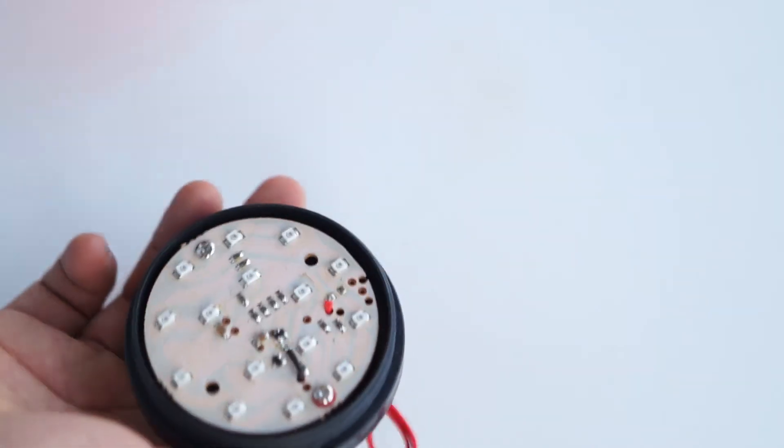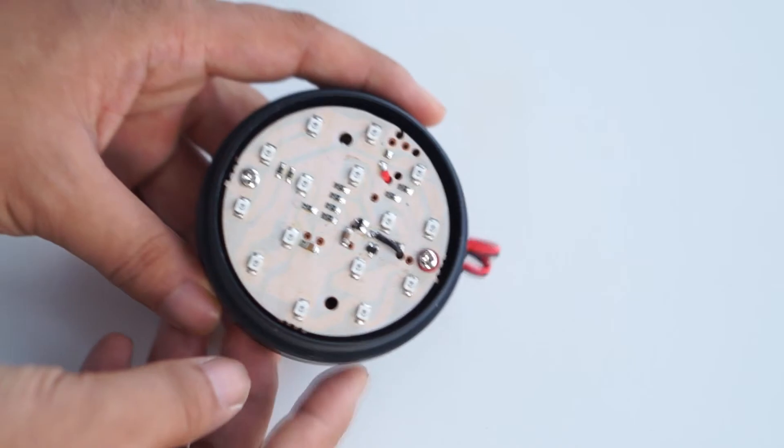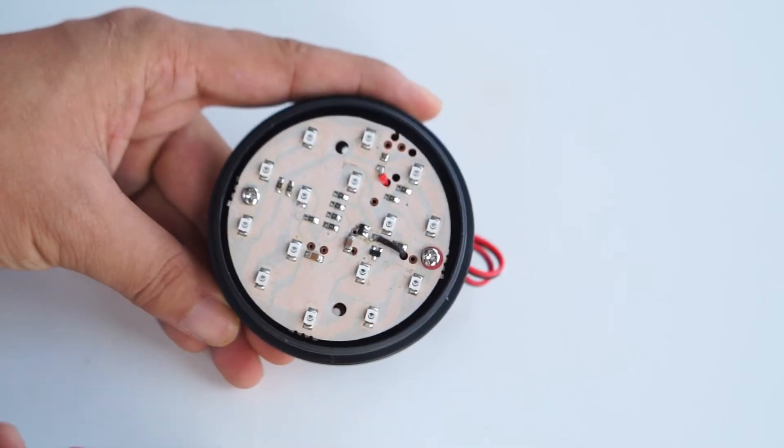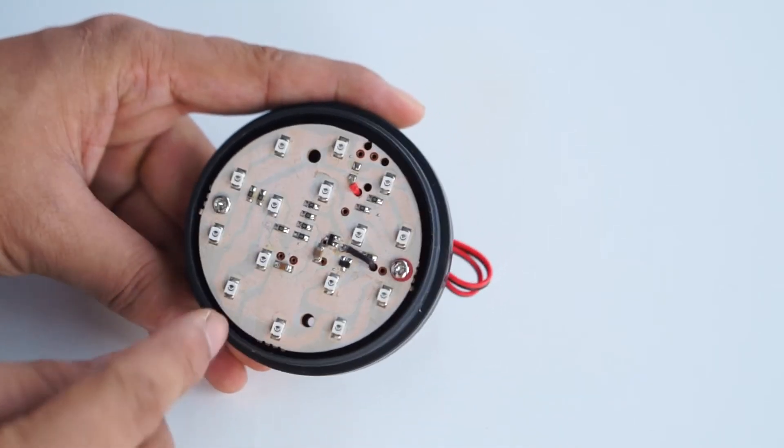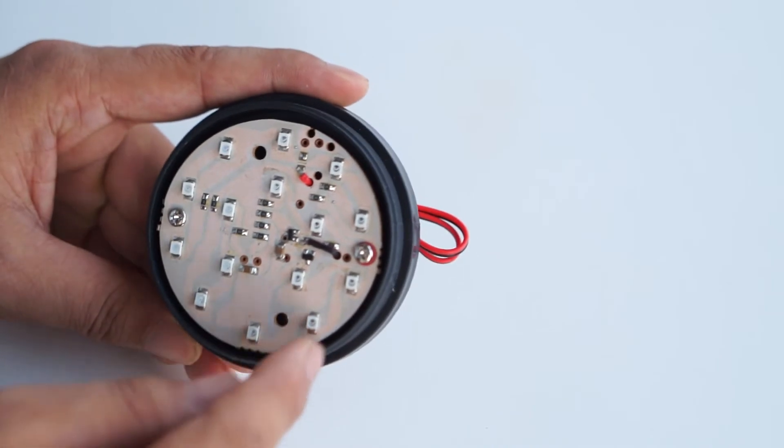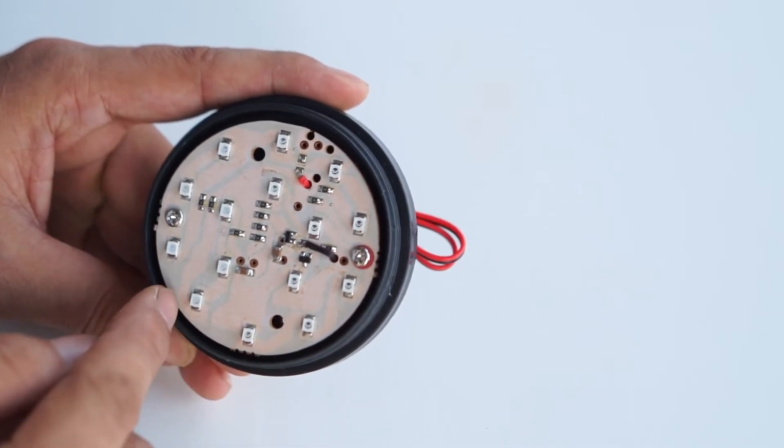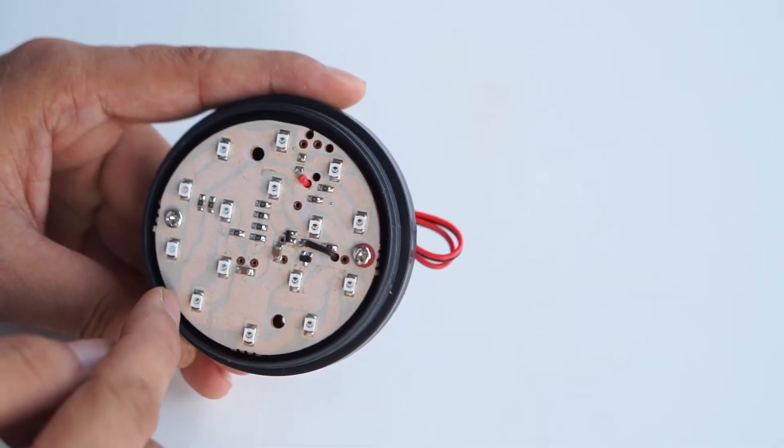Now I'm gonna screw off the red lens so we can see the internal design of the strobe light. So we can see it has many small SMT LEDs.